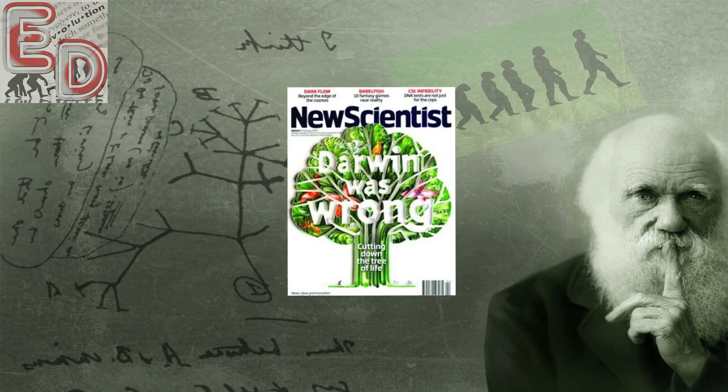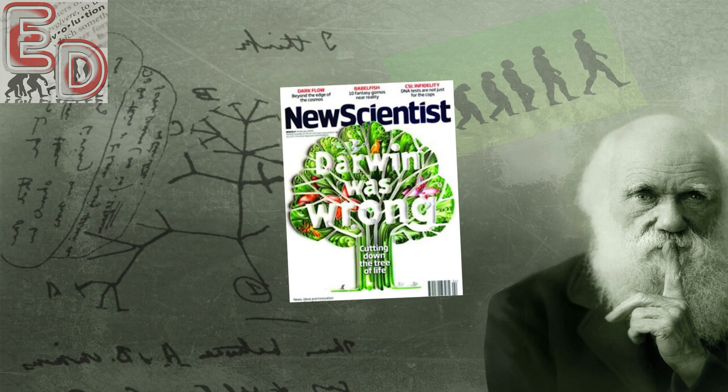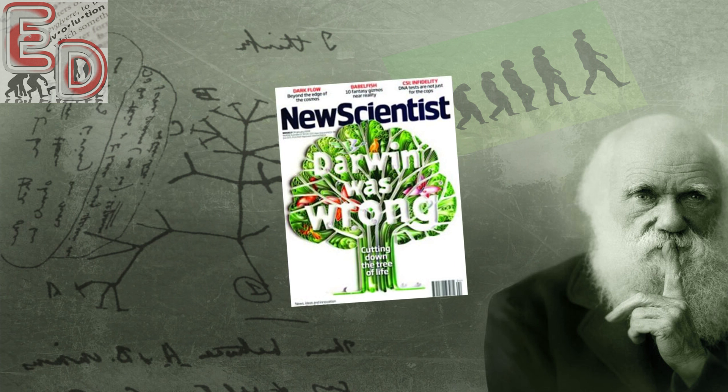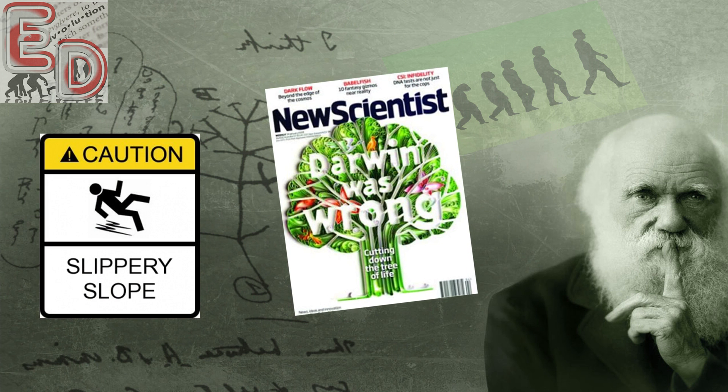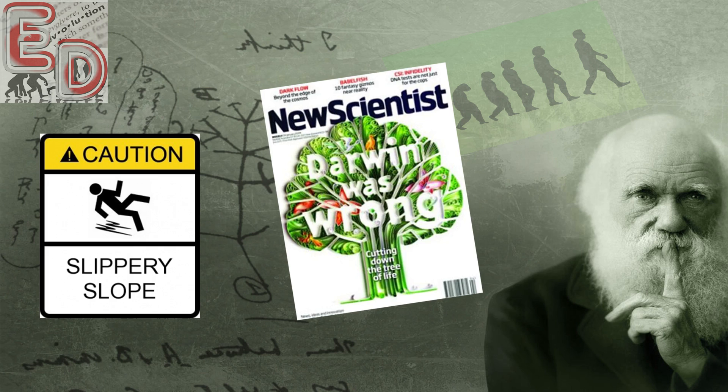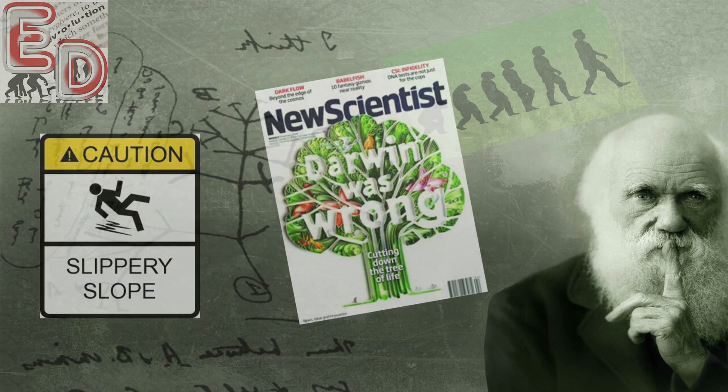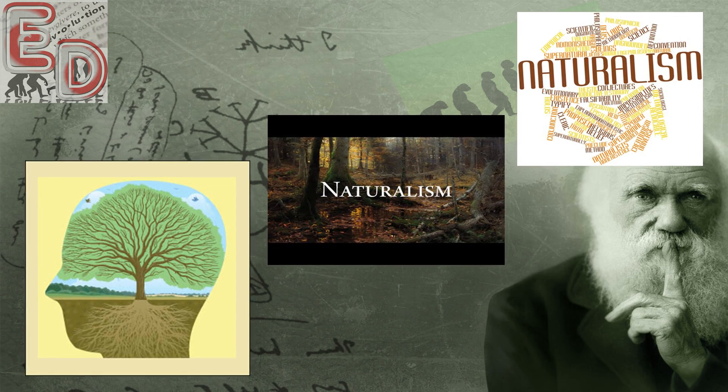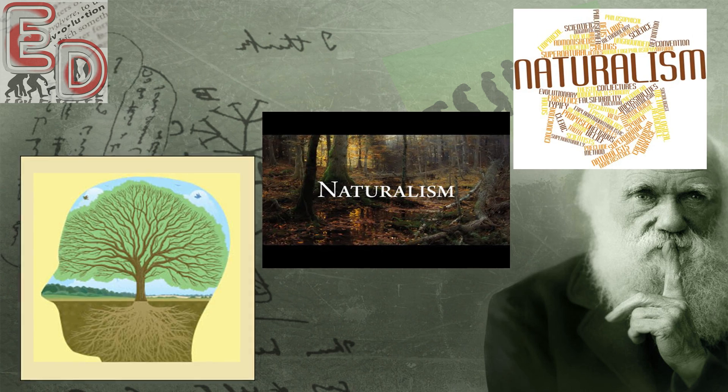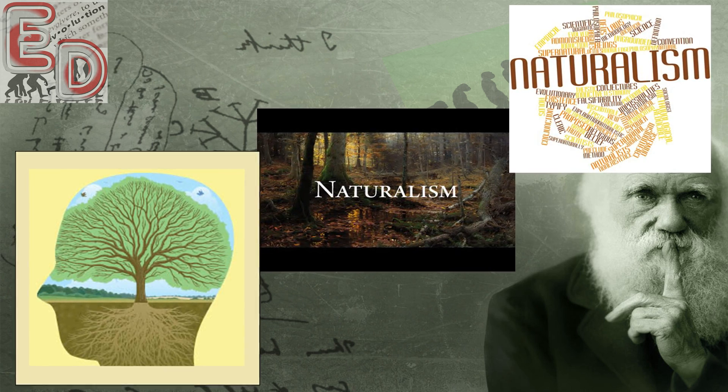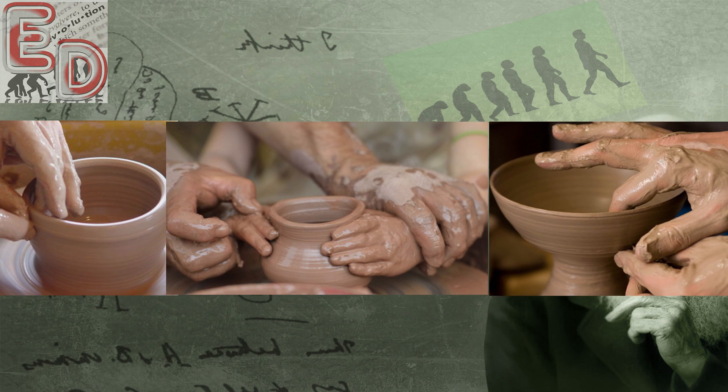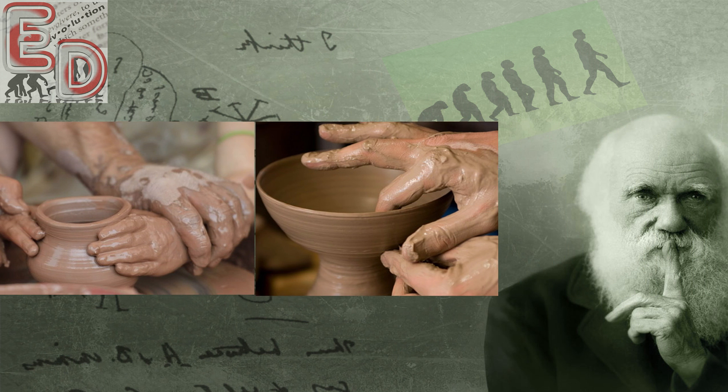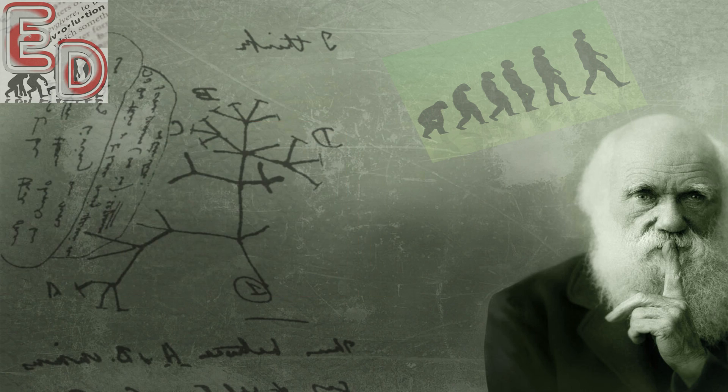So Dawkins points to what amounts to a failed prediction as the ultimate refutation of creationism. The reason that this is even possible is that evolution is such a slippery theory that any new data, no matter how contrary to previous predictions, can be made to fit. The only true requirement is a philosophical bias towards naturalism. It is amazing how well evidence fits evolutionary theory once that theory is massaged and molded to fit each new contradictory discovery.